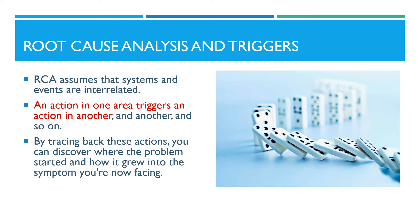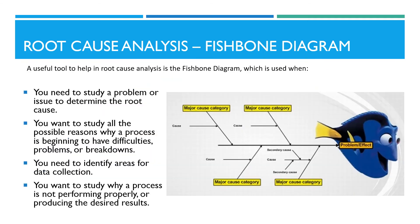A second useful tool in root cause analysis is the fishbone diagram, which is used when you need to study a problem or issue to determine the root cause, or you want to study all the possible reasons why a process is beginning to have difficulties, problems, or breakdowns, or you need to identify areas for data collection, or you want to study why a process is not performing properly or producing the desired results.